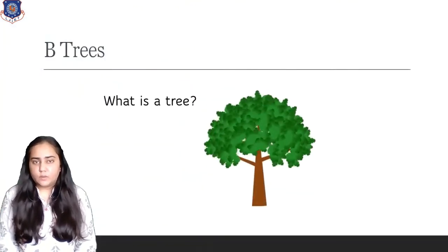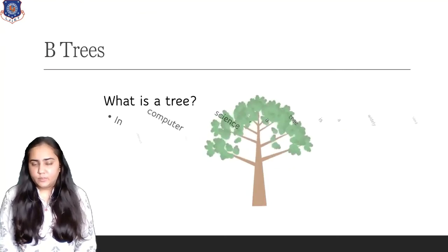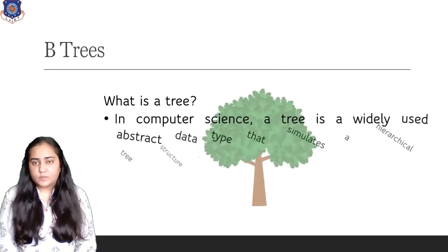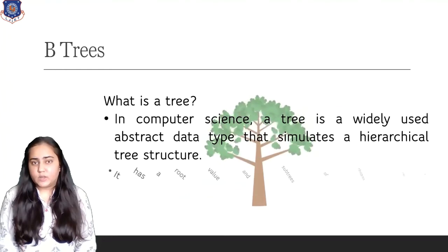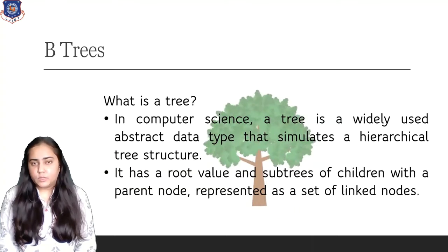First we are going to see what a tree is. In computer science, a tree is a widely used abstract data type that simulates a hierarchical tree structure. It has a root value and subtrees of children with a parent node represented as a set of linked nodes.